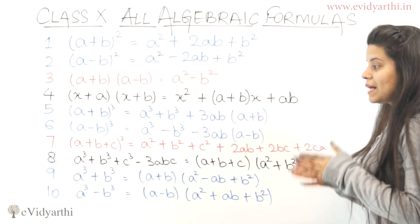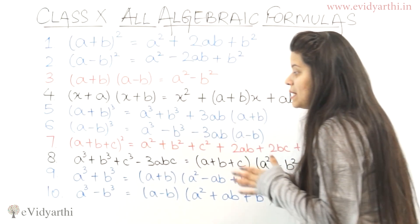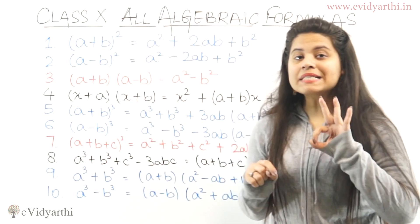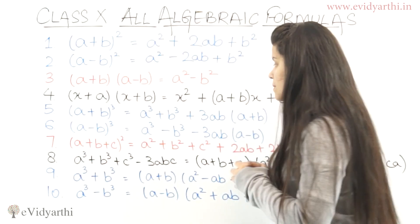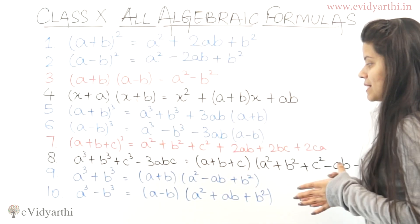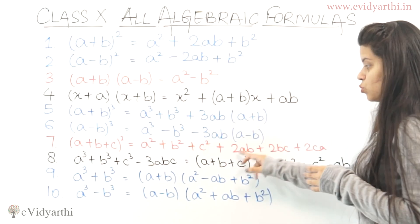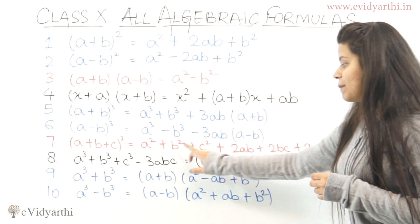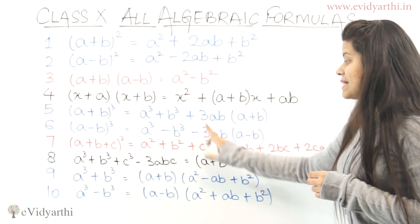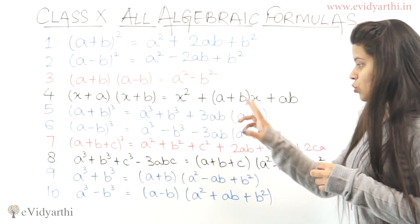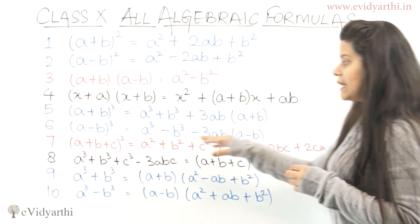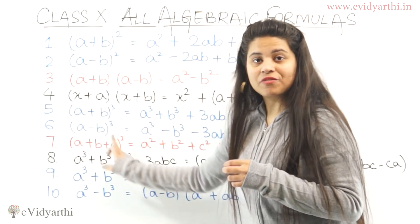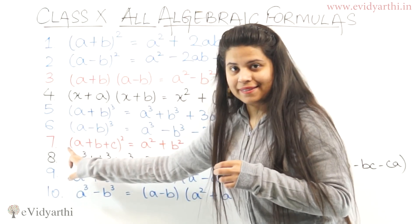After that, we have A plus B plus C whole square. Here you have three numbers, so it expands to A squared plus B squared plus C squared plus 2AB, then plus 2BC, then plus 2CA — multiplying each pair of the three terms.